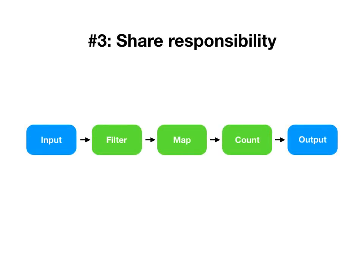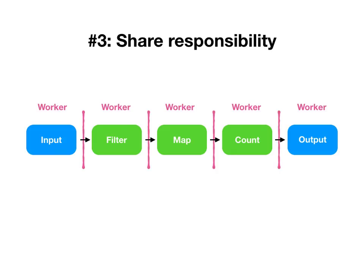We're going to talk about these in the opposite order, building up a foundation and arriving at the key feature of loops. Let's talk about how dataflow systems share responsibility between workers. This is one of the key features of a dataflow system — they can take a computation and divide it up amongst multiple different workers who can operate independently or bring independent resources to bear.